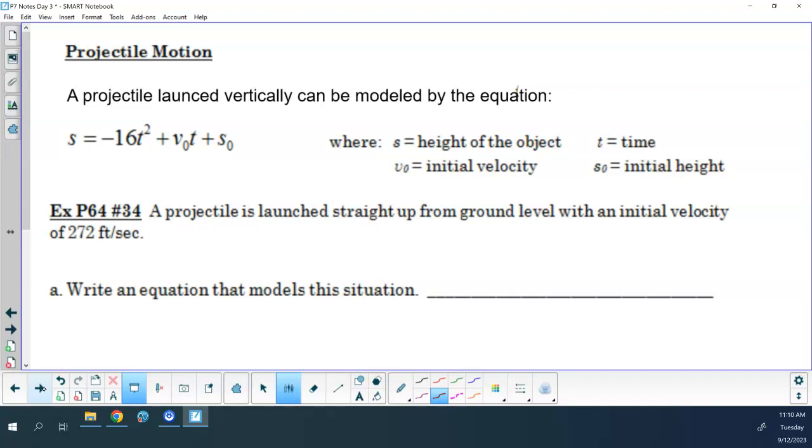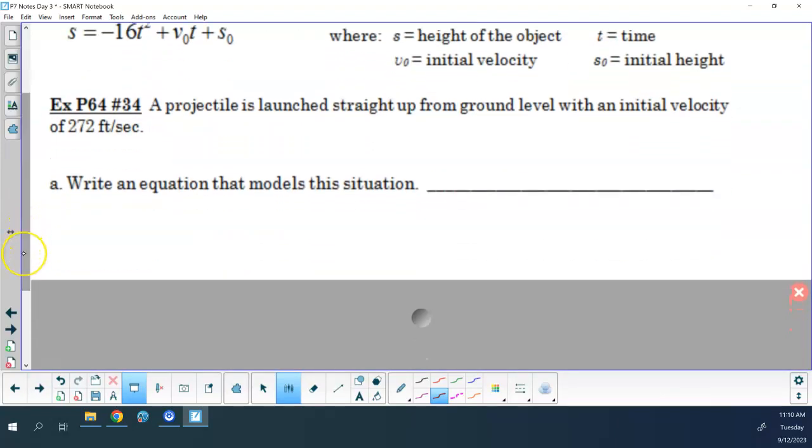Is this your first one on there? Projectile launched straight up from ground level with an initial velocity of 272 feet per second. Part A says, let's write an equation to model this situation. Well, S is going to be S. Negative 16T squared is going to be negative 16T squared plus our initial velocity, 272, so that's going to be plus 272T plus what was our initial height? Zero, so I don't even have to write that. I'm good with that because I don't have to write it because it's just zero. So that would be the model that represents this situation.